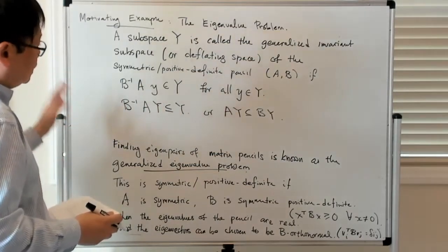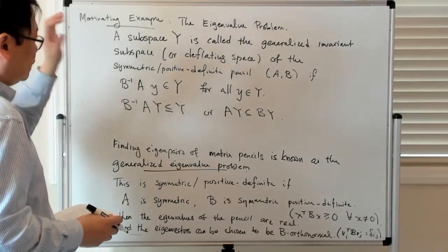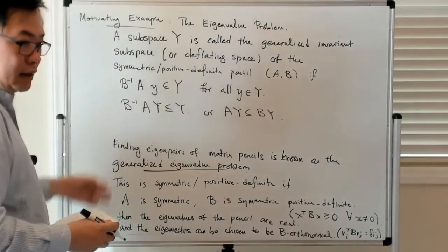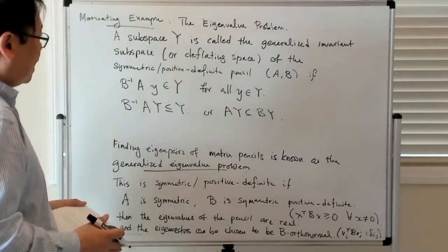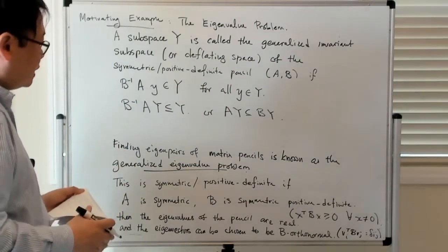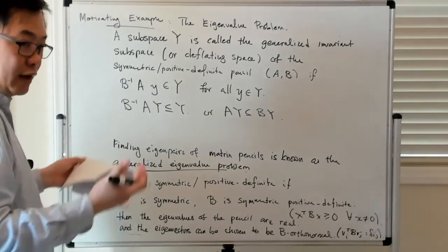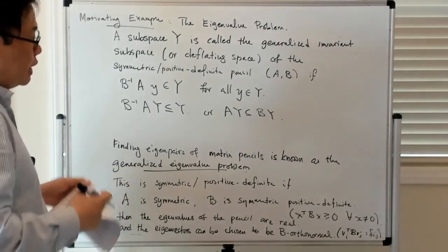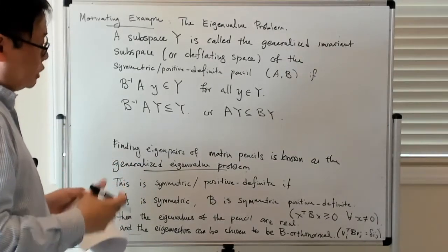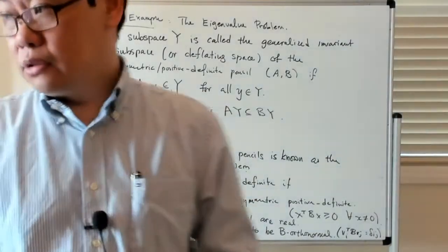So this is just some notation for dealing with the eigenvalue problem and its generalization to matrix pencils. The next thing we'll talk about is how to frame the eigenvalue problem as an optimization problem. So let me just stop here. Thank you.